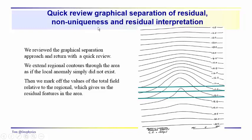We'll talk briefly about non-uniqueness, and then we'll interpret the residual that we extracted. Remember, the graphical separation of the residual starts by assuming that there was no anomaly and you're just continuing the regional field through the area as if there was no perturbation or disturbance associated with a shallower localized object.